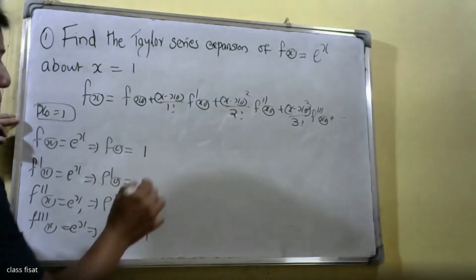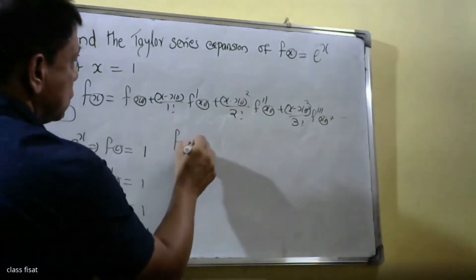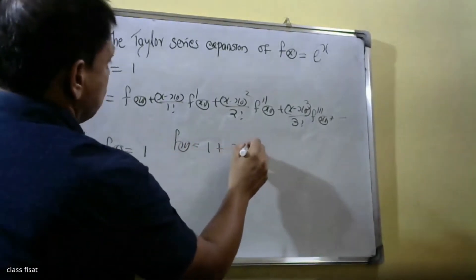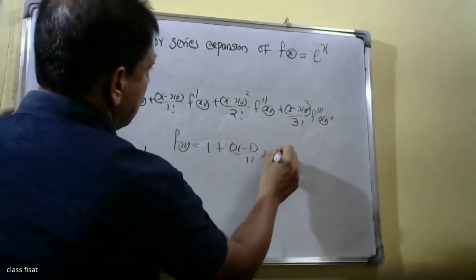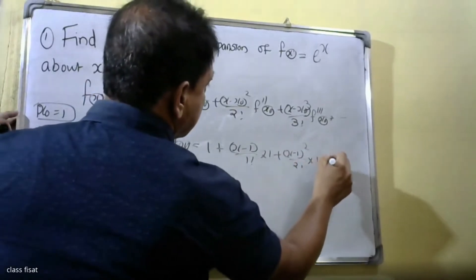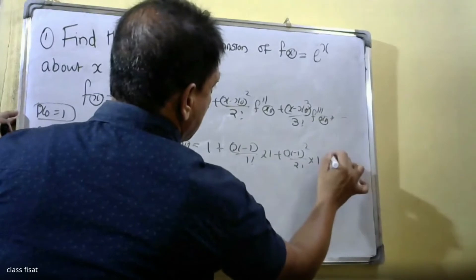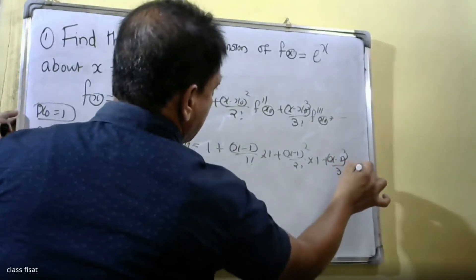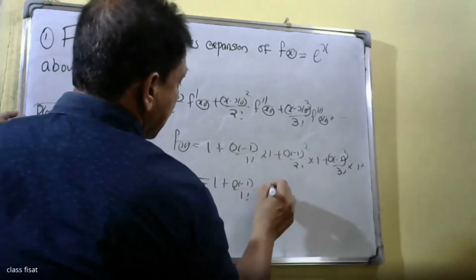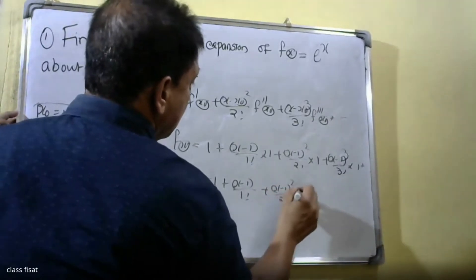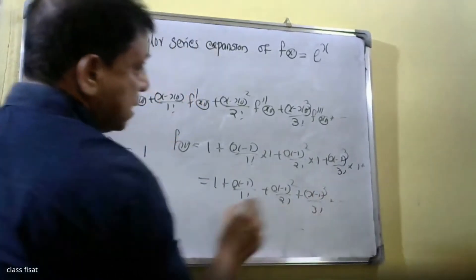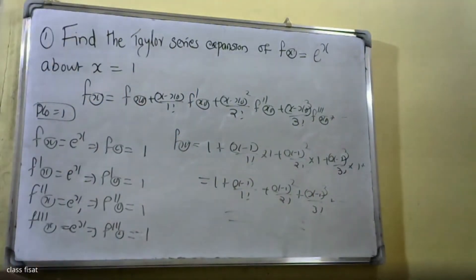Now substituting into the formula: f(x) = 1 + (x − 1)/1! · 1 + (x − 1)²/2! · 1 + (x − 1)³/3! · 1 + (x − 1)³/3! + ... and so on, etcetera etcetera.